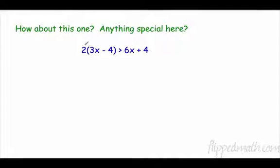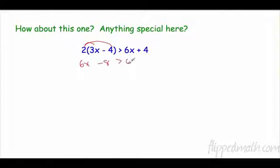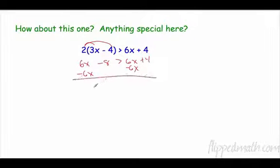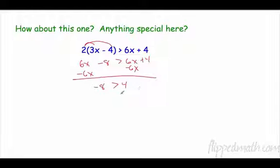Let's multiply this one out. 2 times 3x is 6x, and 2 times negative 4 is negative 8. Is that greater than 6x + 4? Get the x's together — they cancel — leaving: is negative 8 greater than 4? Well, no. That statement doesn't make sense, therefore it is no solution.